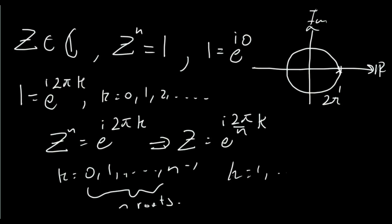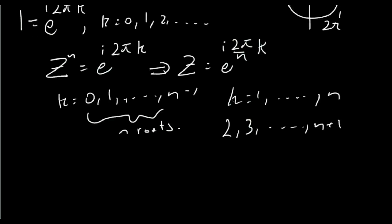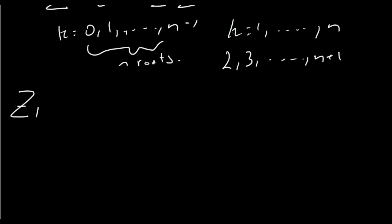We could of course have k starting at 1 and going all the way up to n — this still gives us n roots. Equally, we could shift the range by any amount and get the same set of roots. We might want to label our roots: zk equals e to the i 2π over n times k.